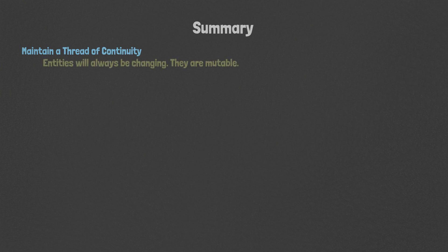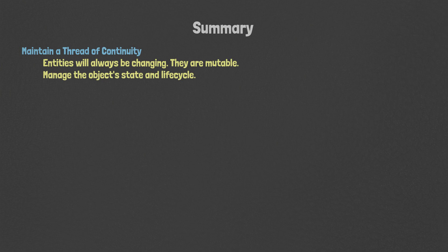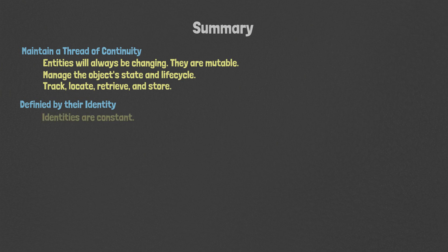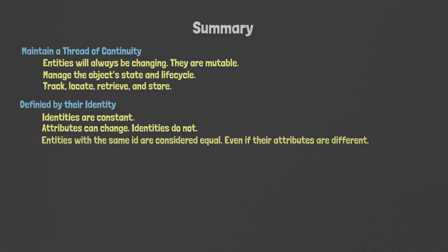Let's summarize the principles and best practices for entities. They maintain a thread of continuity — our entities will always be changing, they are mutable, and they will have a history of how they have changed over time. It's the entity's responsibility to manage the object's state and life cycle, meaning we will be interested in tracking, locating, retrieving, and storing the entity's state. They are defined by their identity — identities are constant. While the attributes of an object can and will change over time, their identities do not. Your identity fundamentally cannot change; it is immutable. Entities with the same ID are considered equal, even if their attributes are different.